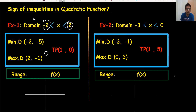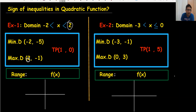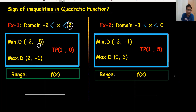If you want to find the range, and there is a problem writing the sign of inequality here in the range, we have a tip for you. In these three coordinates, check what is the minimum value of y and the maximum value of y.